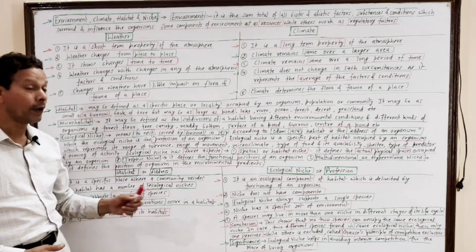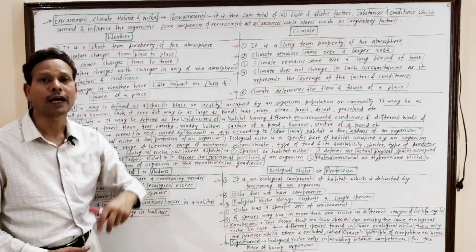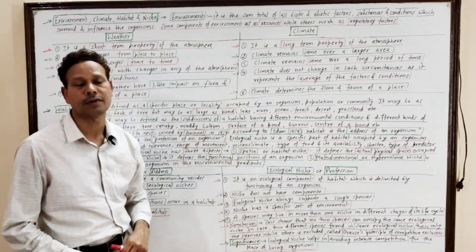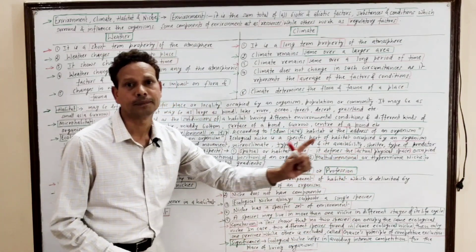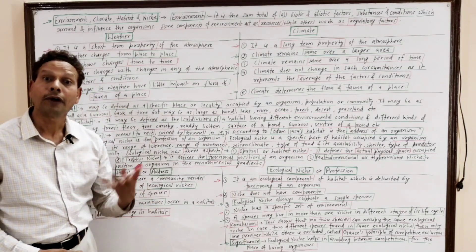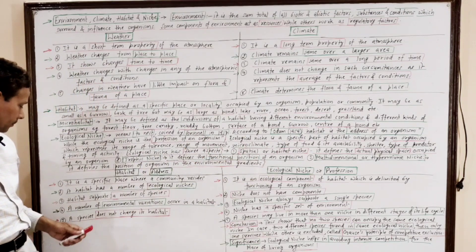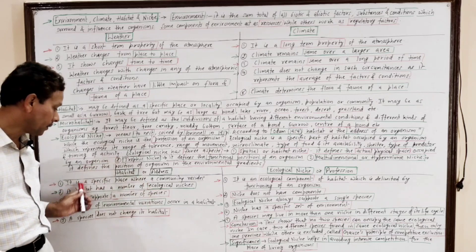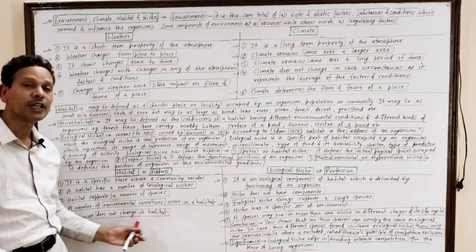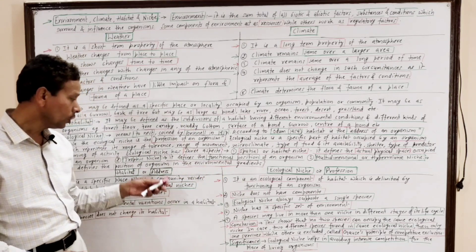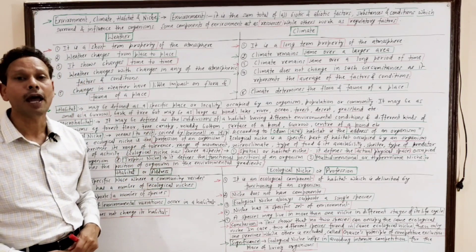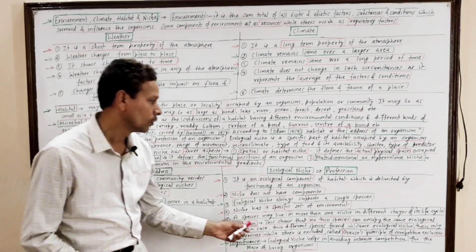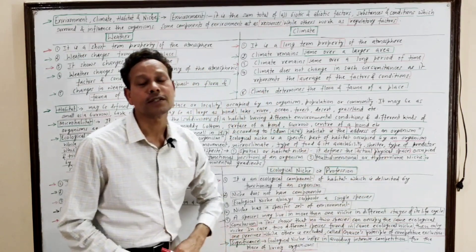In habitat, environmental factors may vary and different environmental variations may occur, but in an ecological niche there is a definite set of environment — no changes in environmental factors. A species doesn't change its habitat throughout its life cycle — it remains in the same habitat — but a species may live in more than one ecological niche during different stages of its life cycle.